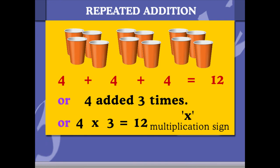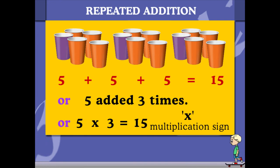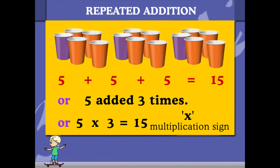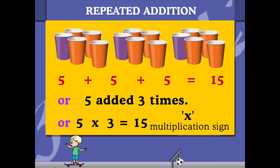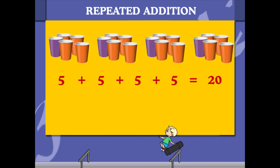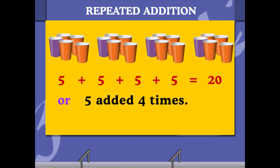The next example is three groups of five cups, or five added three times, the same as five into three, equal to 15. The next example is four groups of five cups, or five added four times.